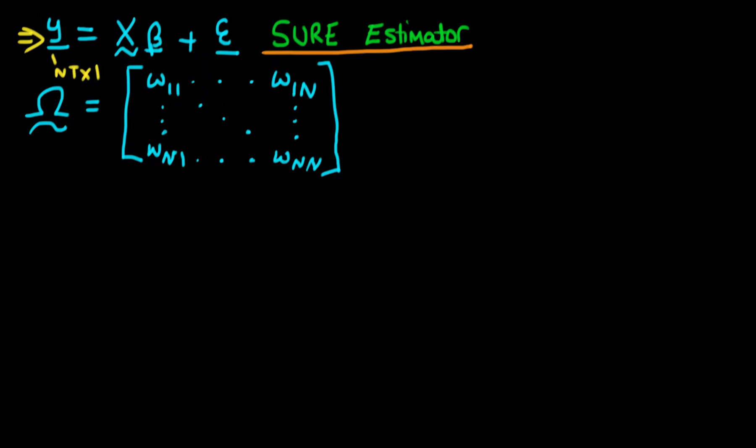And we also went through in the last video and we actually calculated the variance of the error term, the variance of epsilon given that we have our matrix of independent variables X. And we actually found that this was equal to the Kronecker product of our matrix omega with the identity matrix of dimensions t by t.